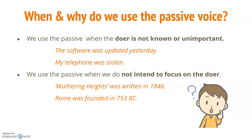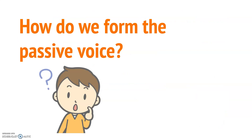We also use the passive voice when we do not intend to focus on the doer. For example: 'Wuthering Heights was written in 1846' and 'Rome was founded in 753 BC.' In both these sentences we're placing the object at the beginning — focusing on the book or the city — and as such we do not include the doer, the person who wrote the book or founded the city.